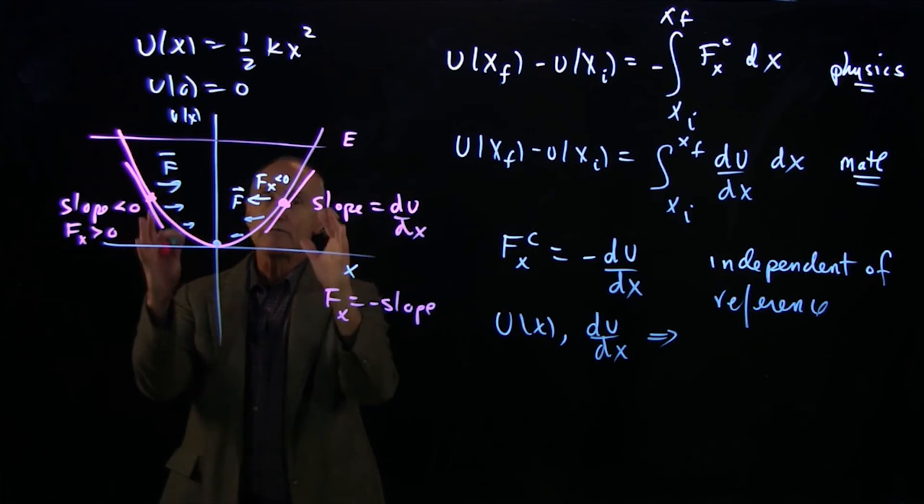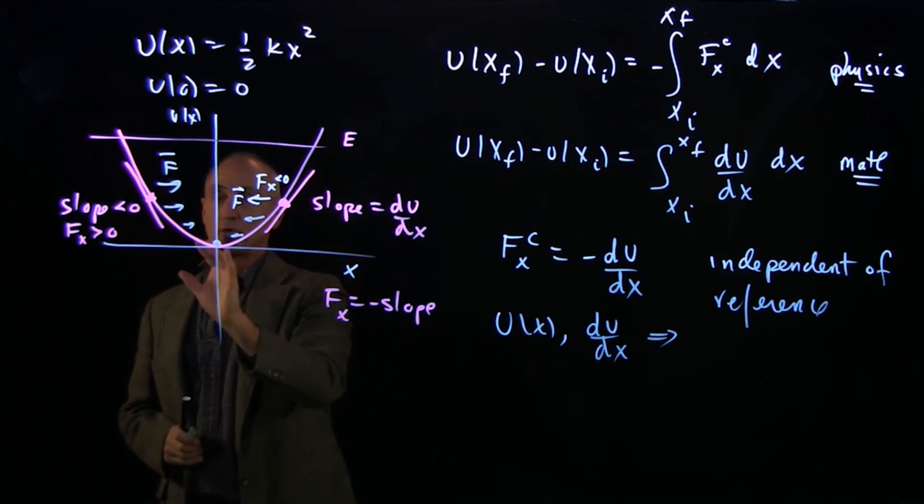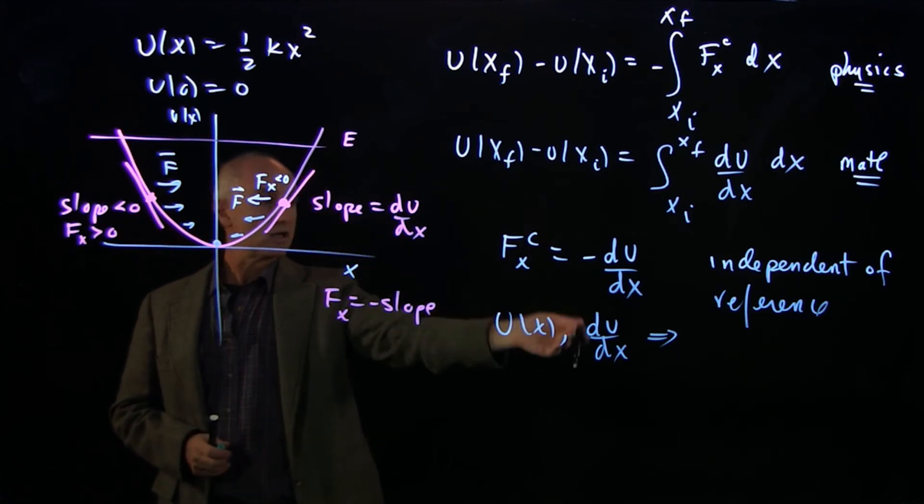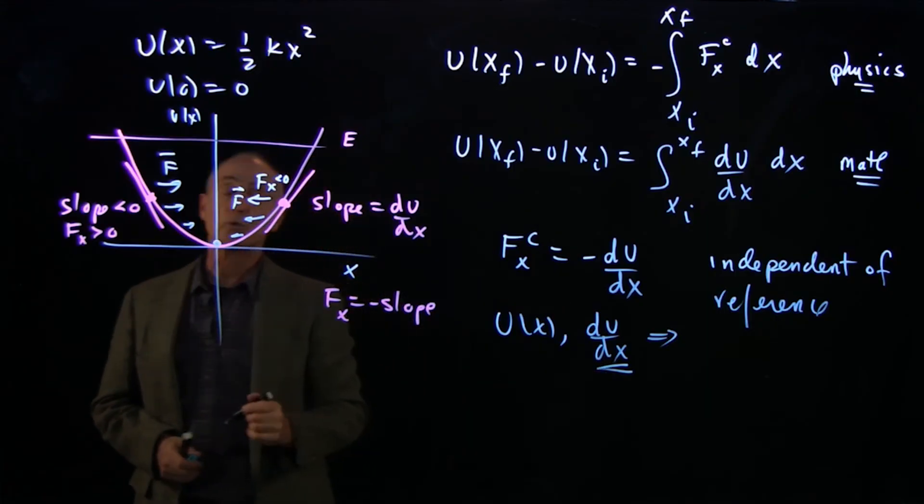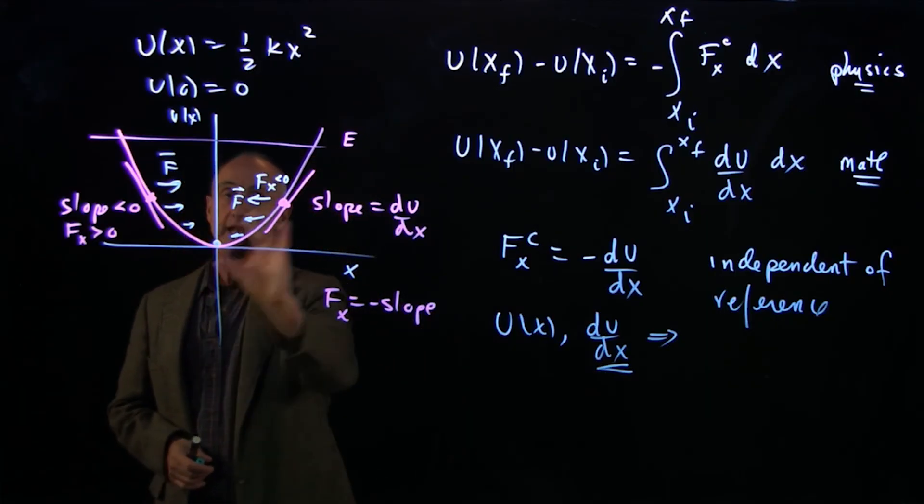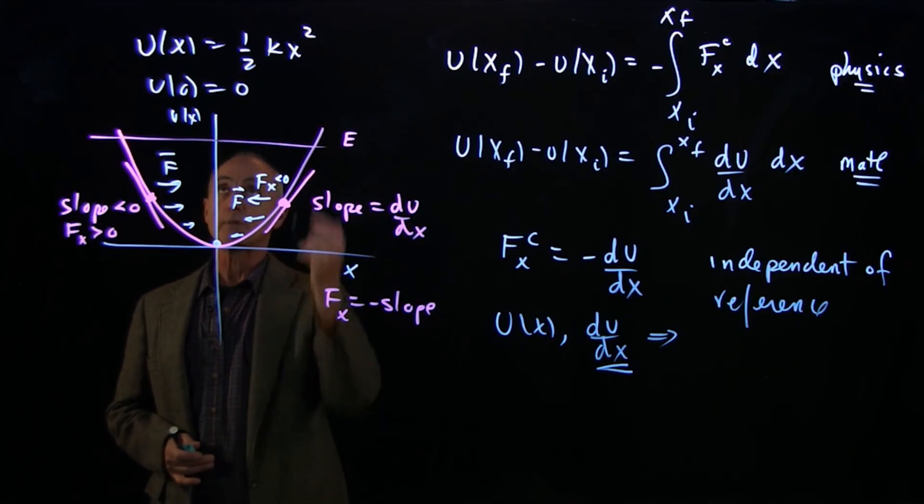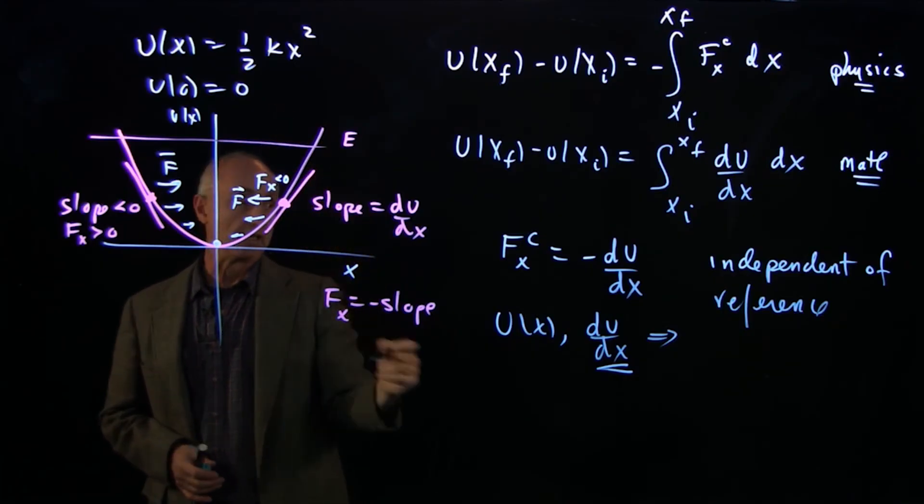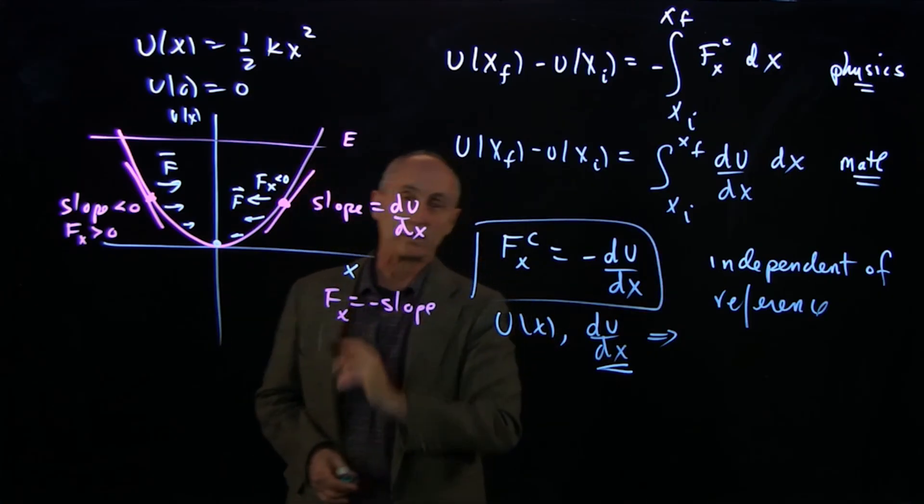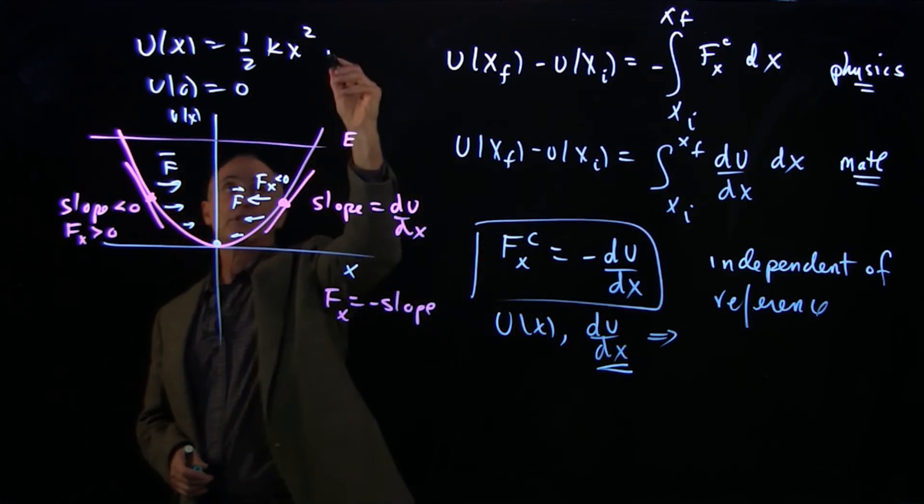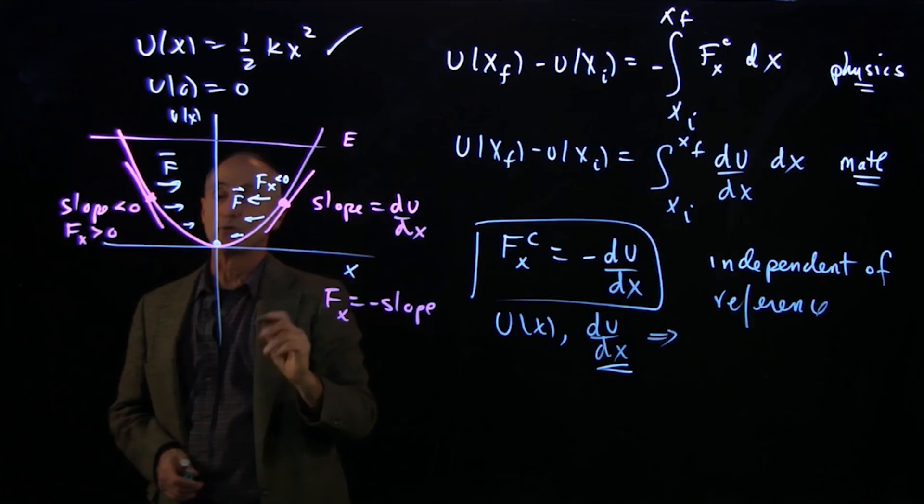So knowledge of the potential function, also by knowledge of its first derivative, gives us information about the force at any point, any state that the system is in. So when we talk about potential implicitly, we also know what the force is. And the potential function is enough to tell us what the force is at any point.